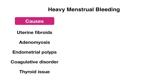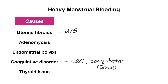To evaluate these causes: for structural causes, we would get an ultrasound. For a coagulative disorder, obtain a CBC, which is also helpful to rule out iron deficiency anemia associated with heavy bleeding and look for platelet dysfunction. Coagulative factors can also be obtained if indicated. For thyroid issues, obtain a TSH as a basic screen.